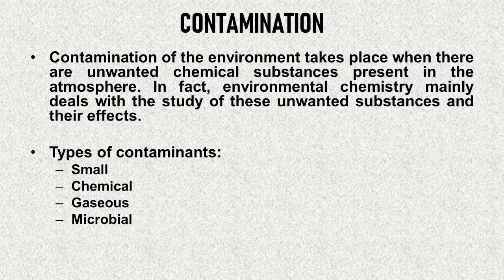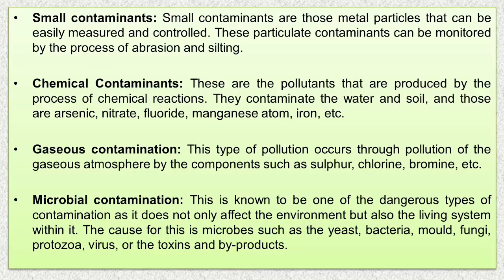Environmental chemistry also covers the basics of general contamination. Contamination in the environment takes place when there are unwanted chemical substances present in the atmosphere. There are mainly three types of contaminants: small, chemical, gaseous, and microbial. Small contaminants are those metal particles that can be easily measured and controlled.